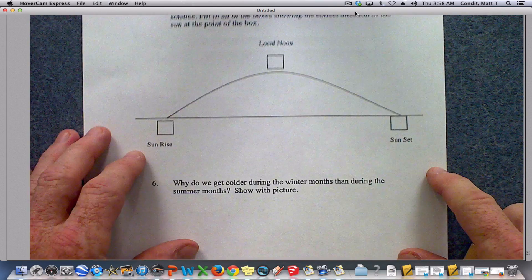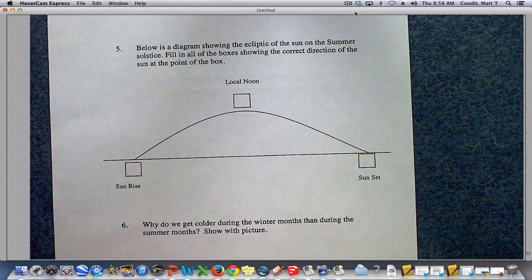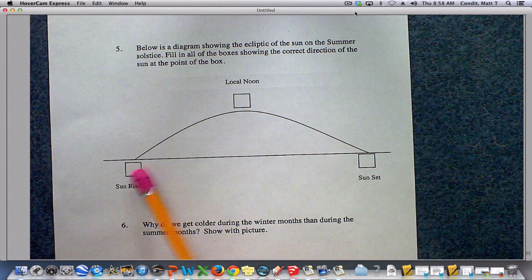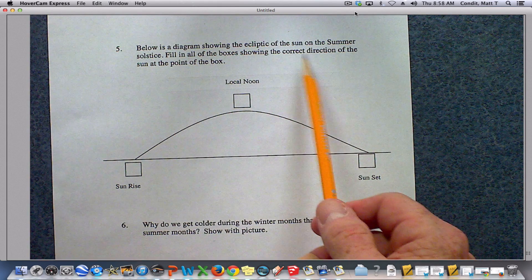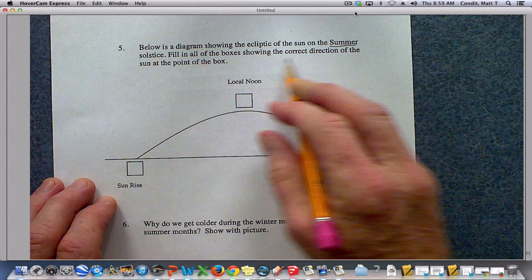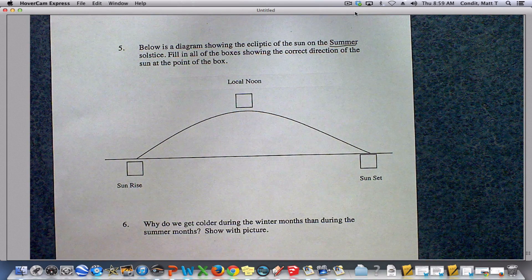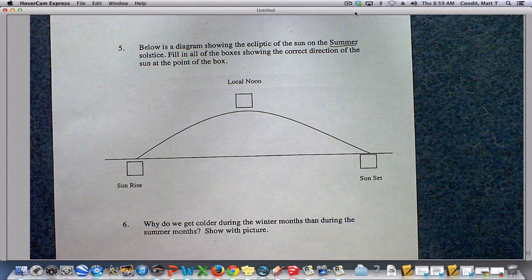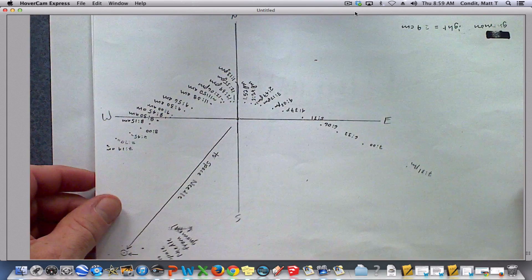Now on the backside of the test, this one is, it's important to note, the ecliptic. So in other words, this is if the sun left a trail, this is the trail that it would leave. And we've got some boxes and it says below is a diagram showing the ecliptic of the sun on the summer solstice. Fill in the box showing the correct direction of the sun at each point. Again, we're going to need our three season shadow plot for this and we're going to need the summer one since we're looking at the summer solstice. So here's the summer solstice.